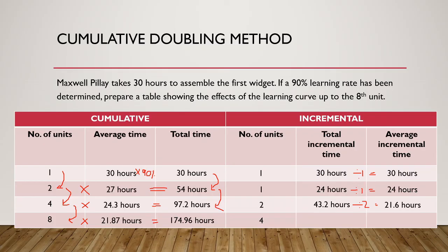We can finish off with our last doubling point, manufacturing an additional four units. The incremental time is 77.76 hours, being the difference between the 174.96 hours for eight units and the 97.2 hours for four units. The average incremental time is then 77.76 hours divided by the four incremental units, giving 19.44 hours. While this method is easy to calculate and understand, it is very cumbersome and not efficient as you will not always produce at a doubling point. To overcome this, we can use either the graphical or mathematical models.